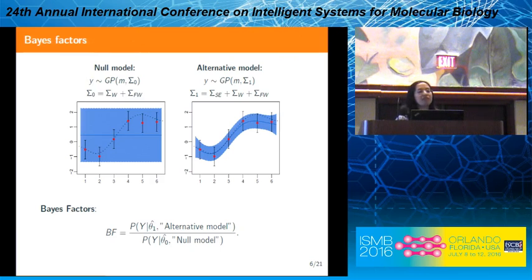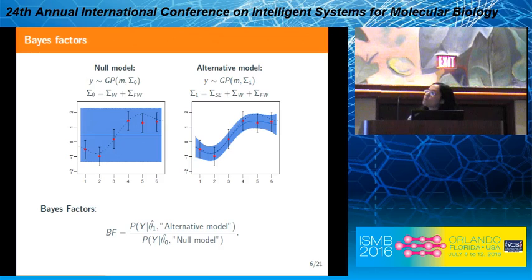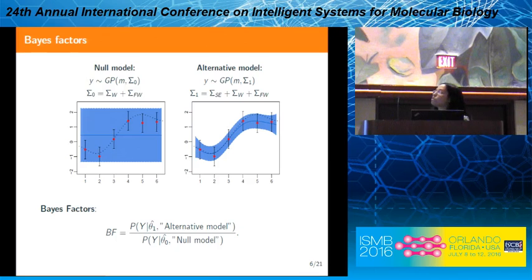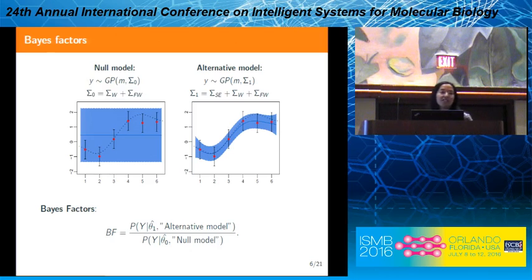For ranking time series, we fit two different GP models with different covariance functions to each time series. In the null model we assume the series comes from a constant function, so the covariance matrices are only the noise covariance matrices — white noise and fixed variances. In the alternative model we assume a changing pattern, so we also include the squared exponential covariance matrix. By dividing their marginal likelihoods we get a Bayes factor. A high Bayes factor means the data is highly likely to come from a temporally changing model.